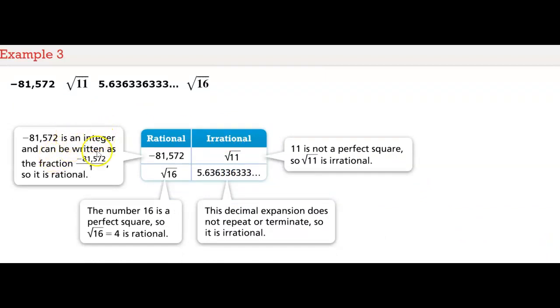And so here's more explanation. Negative 81,572 is an integer and can be written as this fraction. So it's rational. Square root of 16 is a perfect square because it equals 4, which is rational. 11 is not a perfect square. So it's irrational. And then this decimal, as I said before, it doesn't repeat or terminate. It's irrational.